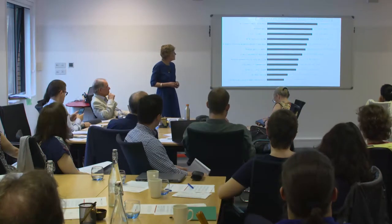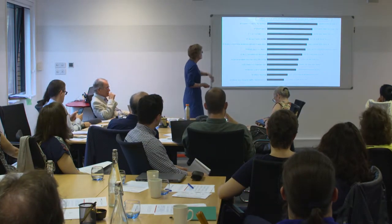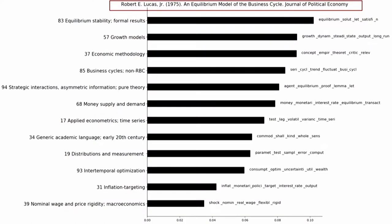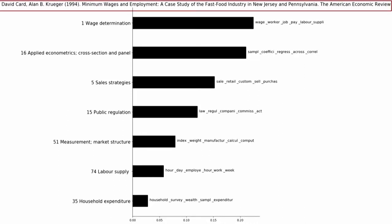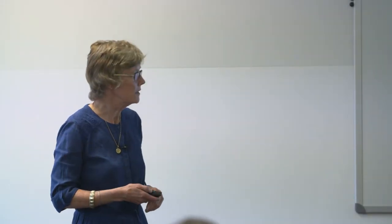If we look at Lucas's famous 1975 article, 'An Equilibrium Model of the Business Cycle,' it's most heavily weighted in topic 83, which is equilibrium stability and formal results. It's also got a lot of growth theory, business cycles, et cetera. So you're led to think that this method actually has some credibility. This is a homage to Alan Krueger — the Card-Krueger paper is heavily weighted in wage determination and then applied econometrics, cross-section and panel. You can choose any particular or favorite article and ask for the weights to be identified for the topics that have fictively written that paper. That's about the technique, and what we then wanted to know was: having taken this corpus of more than a hundred years of economics research, how could we bring that to the question of whether Samuelson really marked a change in economics textbooks?